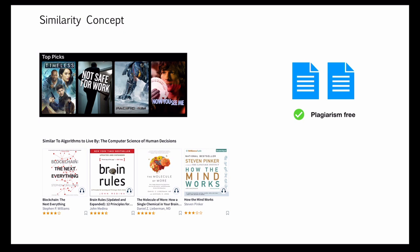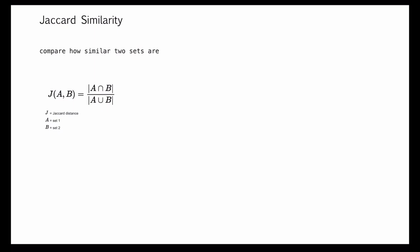What is Jaccard similarity? Jaccard similarity is one of the similarity metrics that compare how similar two sets are. This is the formula of Jaccard similarity: the similarity of set A and B is equal to the intersection of A and B divided by the union of A and B.